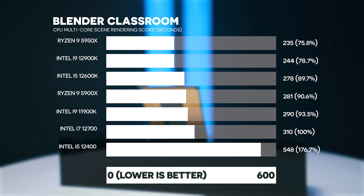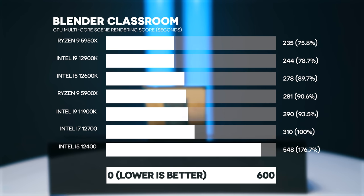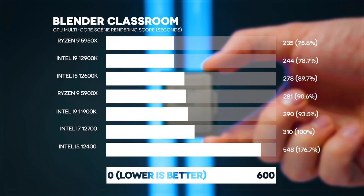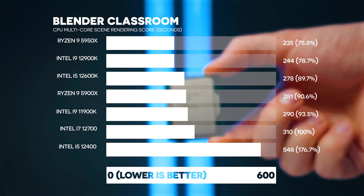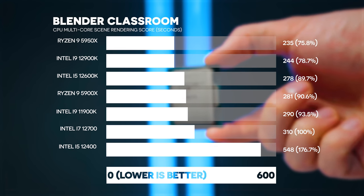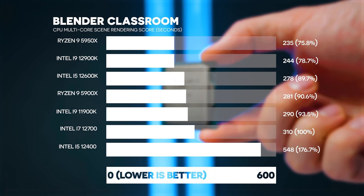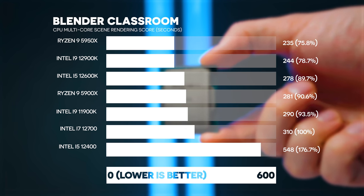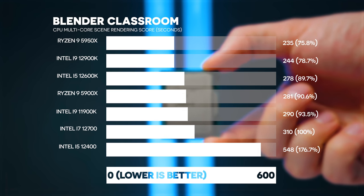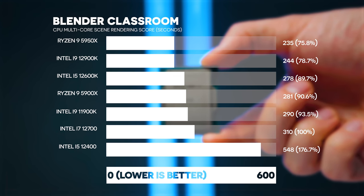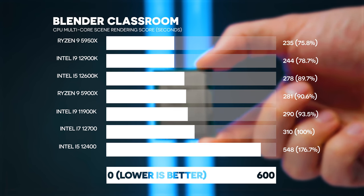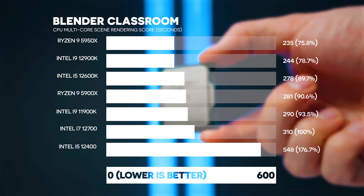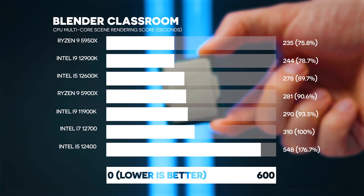Even the previous generation i9 12900K is about seven percent faster in this Classroom scene. I believe this result is related to the TDP - the CPU can't push all that power continuously and drops down to 65 watts to complete longer tasks. It would be interesting to test the 12700K as well, since I'd expect it to slot somewhere between the 12600K and 12900K.